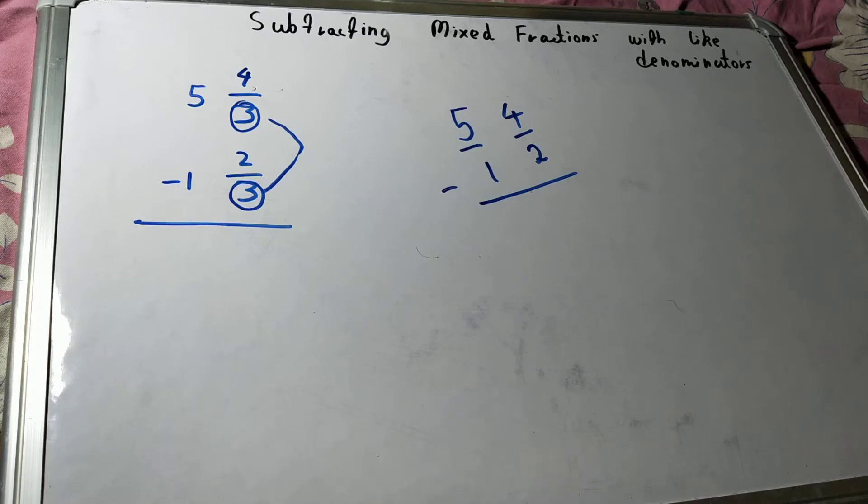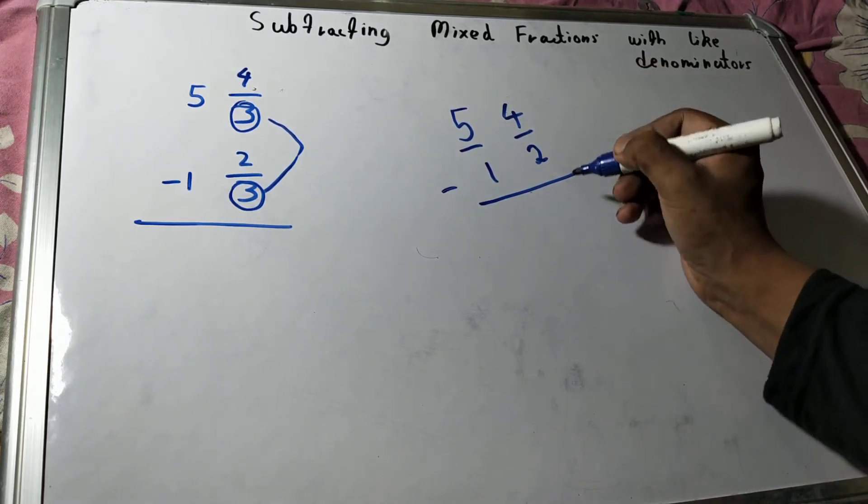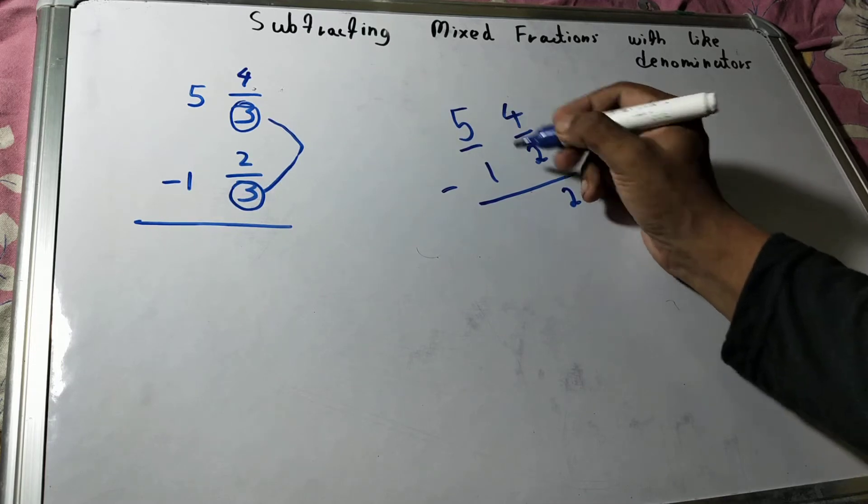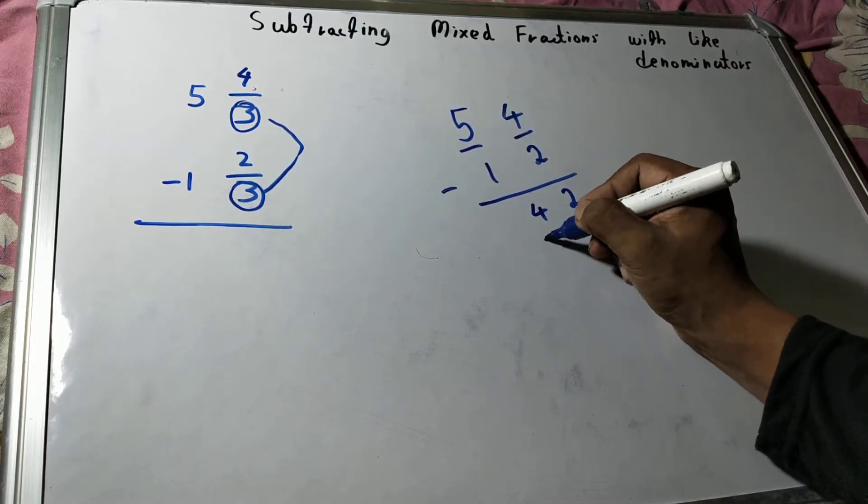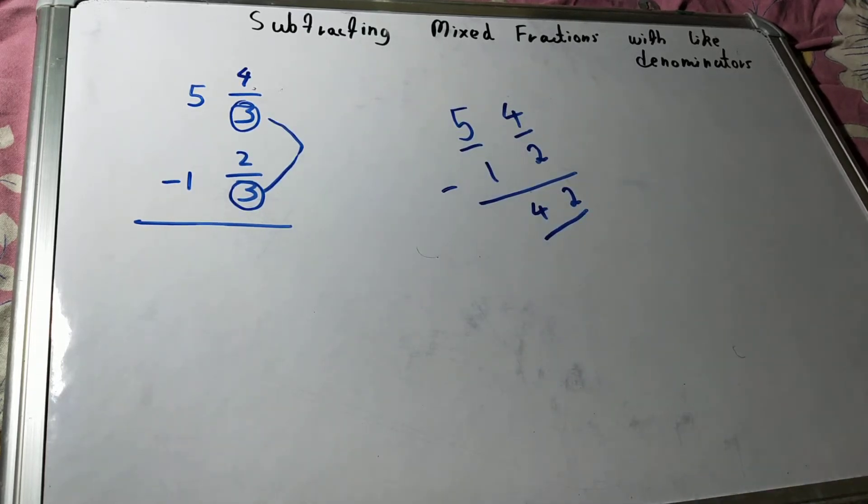Just use the normal subtraction process. So 4 minus 2 is 2. 5 minus 1 is 4. So you are getting the answer is 4 and 2.